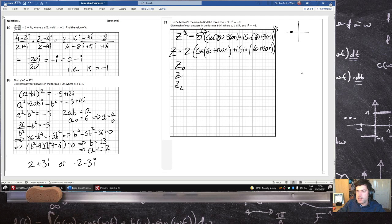So z 0, z 1 and z 2. And z 0, n is 0. That's cos 60. What's cos 60? Cos 60 is a half, so that's a half and that's root 3 over 2, so that'll be 1, 2 times a half is 1 and 2 times root 3 over 2 is root 3.